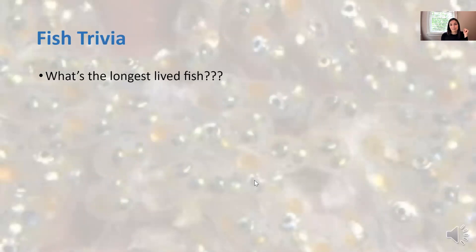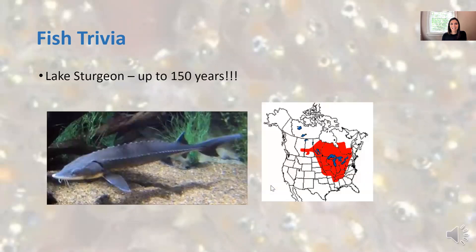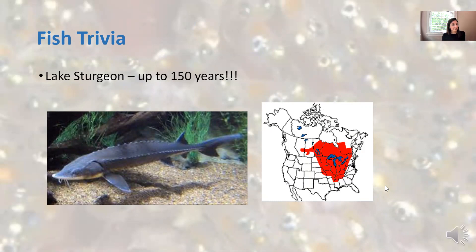Instead of a joke today, we have fish trivia. What is the longest lived fish? Probably not the fish you got at the fair. It's the lake sturgeon - they can live up to 150 years. These are one of those examples with ganoid armor scales, and it must be working if they can live 150 years. They're mostly found in the Great Lakes region, up into Canada and the Midwest. Lake sturgeon are also a source of caviar. Hope you have a great day and I look forward to seeing you in class.